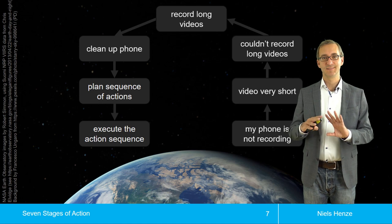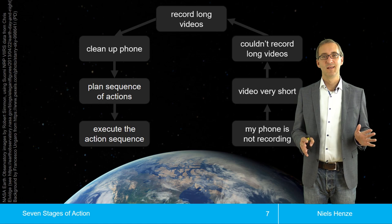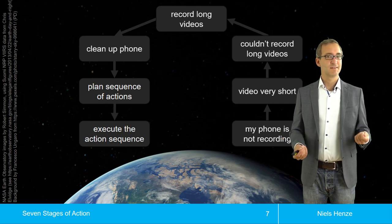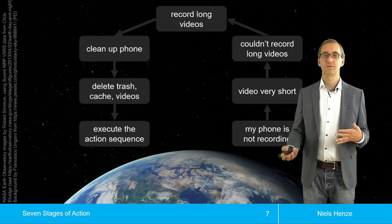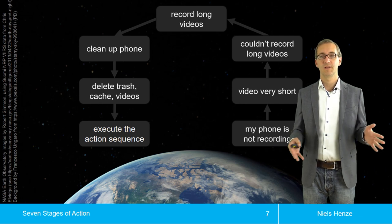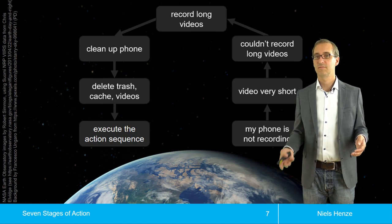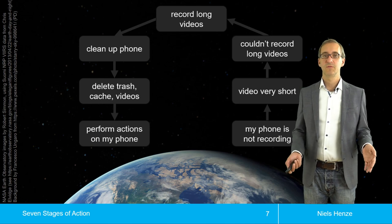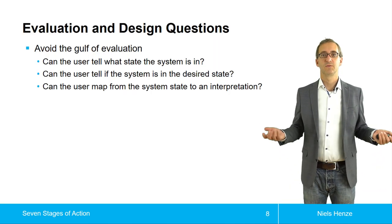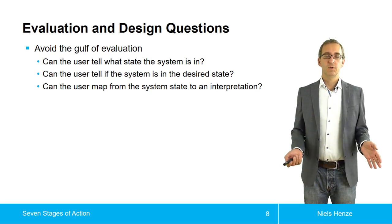That goal — formalizing it — was okay. But then figuring out how to get there took me half an hour of searching Google. I then realized I had to clean up my phone. I developed an action sequence: deleting trash, deleting caches, deleting old videos. Then I performed the actions on my phone, and the world was much better — I could record longer videos again. I basically followed these seven stages.